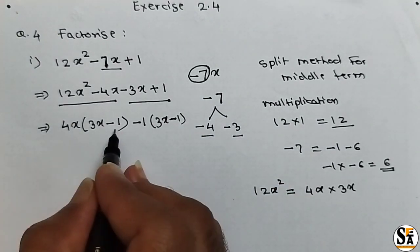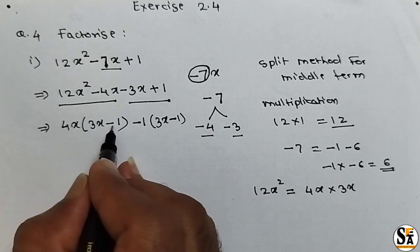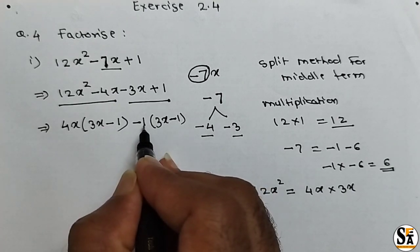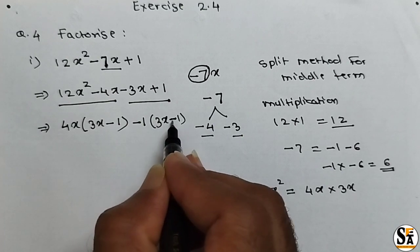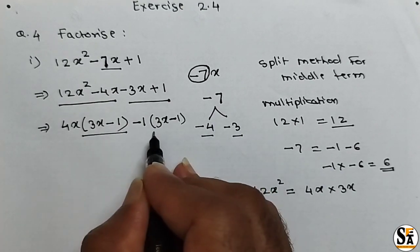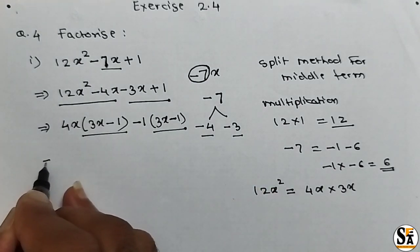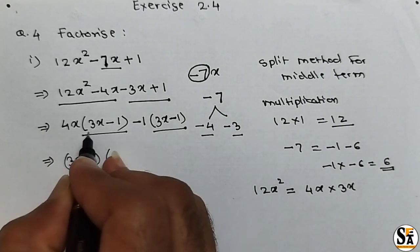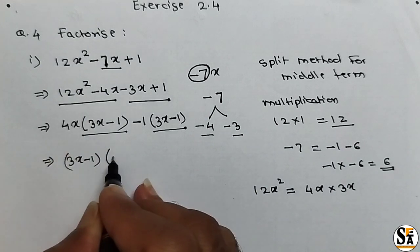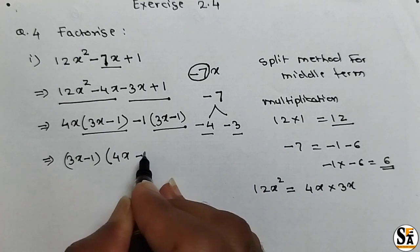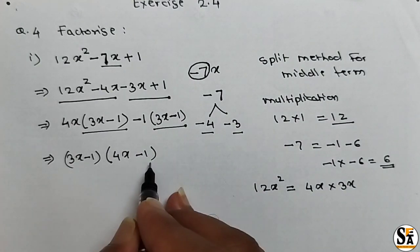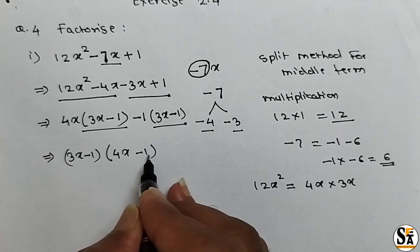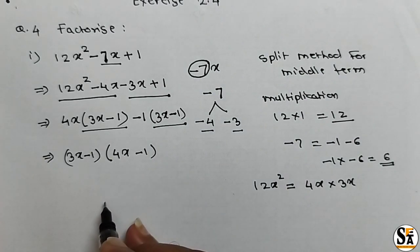Now see here, from these two terms there are factors: for the first term, 4x and 3x minus 1; for the second term, minus 1 and 3x minus 1. The factor 3x minus 1 is common in both terms, so we take 3x minus 1 outside the bracket. Inside the bracket, remaining terms are 4x from the first term and minus 1 from the second term. So the factors are 3x minus 1 and 4x minus 1.